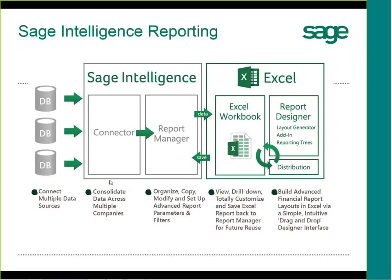The Connector holds the pathway to each of your tables and all of the fields you're going to push to Excel — all the columns you'll view. Report Manager is where you set your parameters and filters. Excel is used to display the template, showing all of the data you're viewing. You can use 100% of Excel functionality with your report.